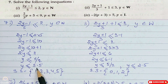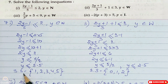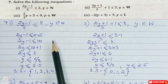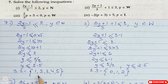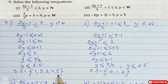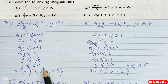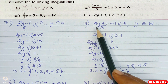The value is 5.5. So what is our solution set? Y belongs to natural number. So it will be 1, 2, 3, 4 and 5. Because y is less than or equal to 5.5.